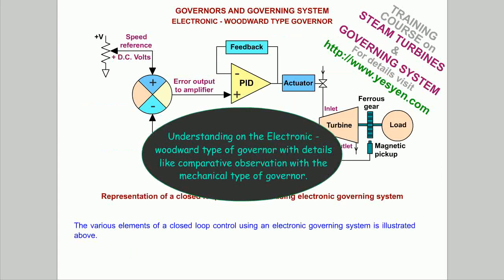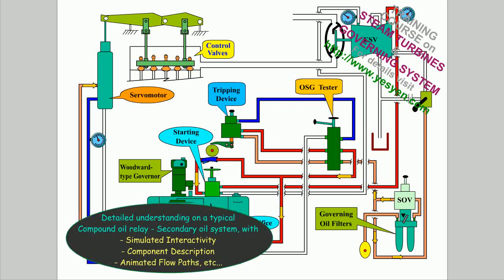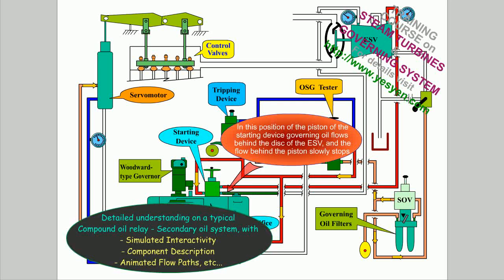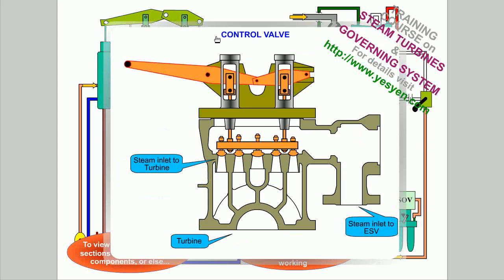Understanding of the electronic Woodward type of governor is provided, with details like comparative observation with the mechanical type of governor. Detailed understanding of a typical compound oil relay and secondary oil system is included, with simulated interactivity, component description, animated flow paths, etc. Individual component working is shown on mouse-over of respective component images.